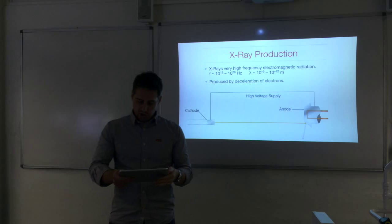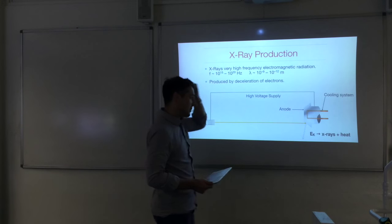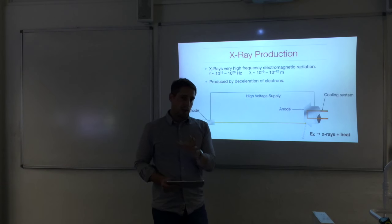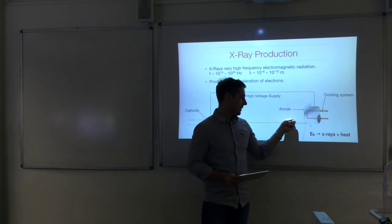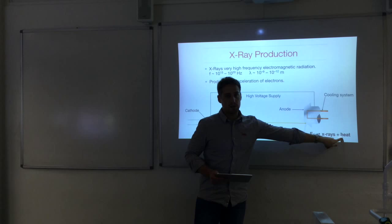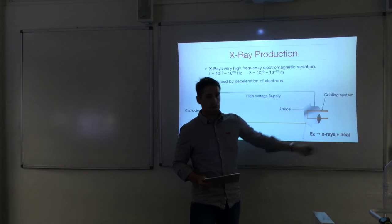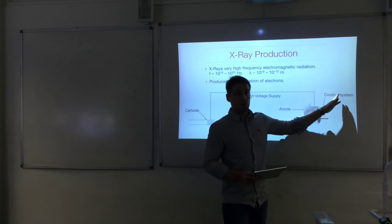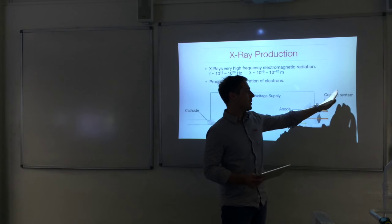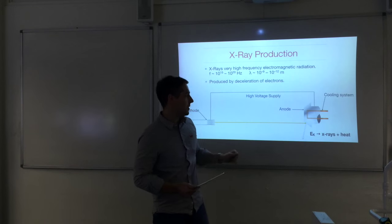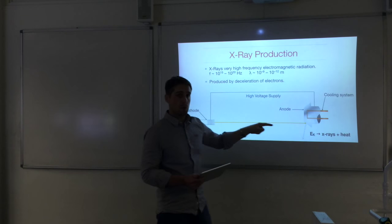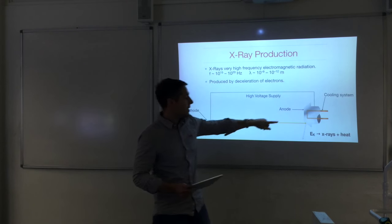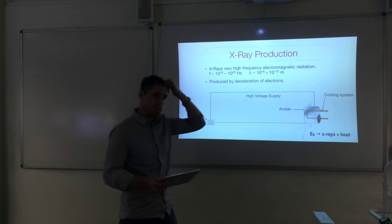There is an energy conversion at the anode: the electron kinetic energy is converted into x-rays and heat. Most of the energy — about 99% — is converted into heat, and only 1% goes into forming x-ray photons. Hence the need for methods to keep the anode cool: a cooling system pumps coolant through the anode, and it is often rotated so that heat input is distributed throughout the metal rather than concentrated in one small region.